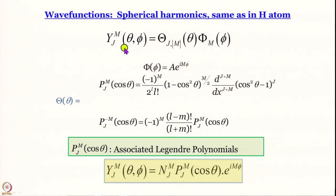For the rigid rotor, we have discussed how one can set up the Schrödinger equation starting from the square of the angular momentum operator. We worked out the phi-dependent part and gave the answer for the theta-dependent part. The wave function is essentially the spherical harmonics Y(θ,φ), equal to the theta-dependent part multiplied by the phi-dependent part.